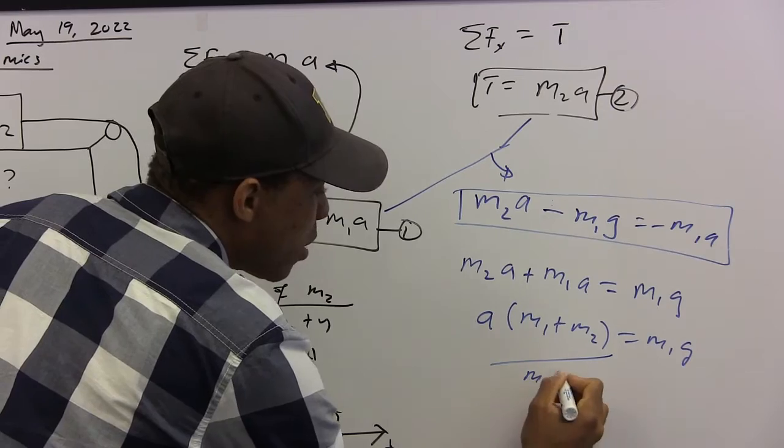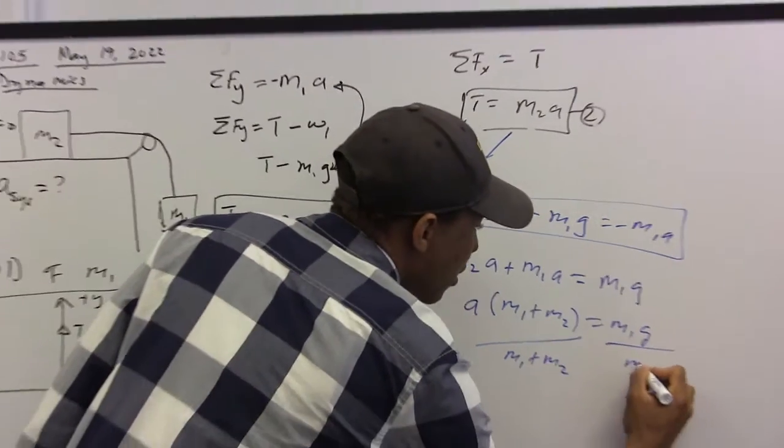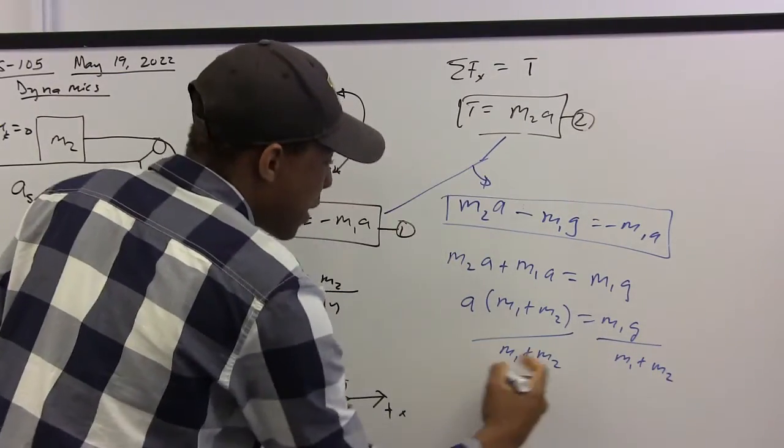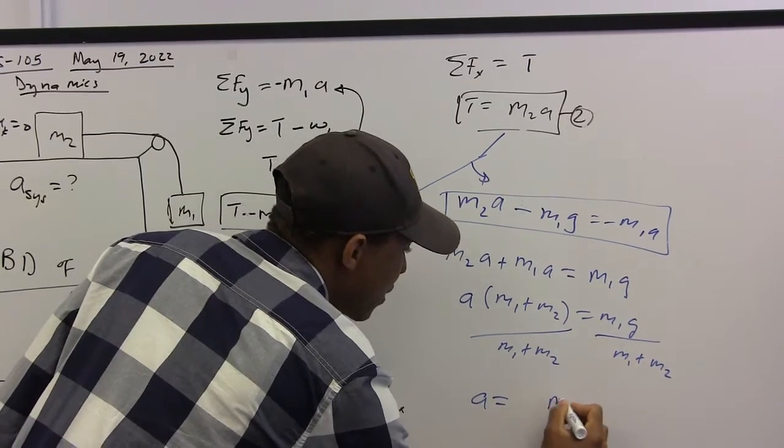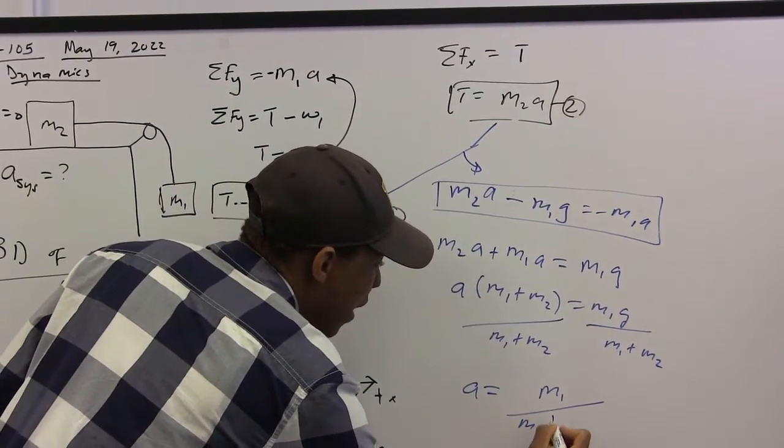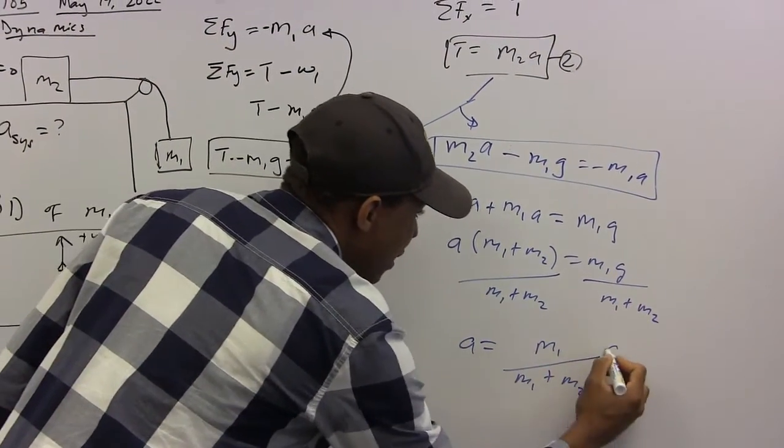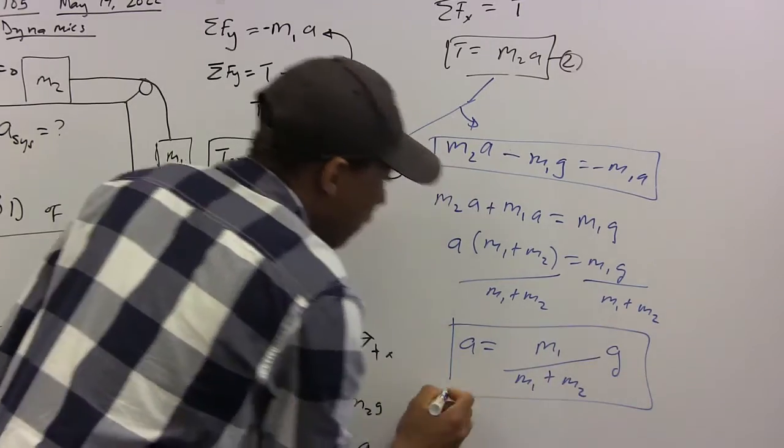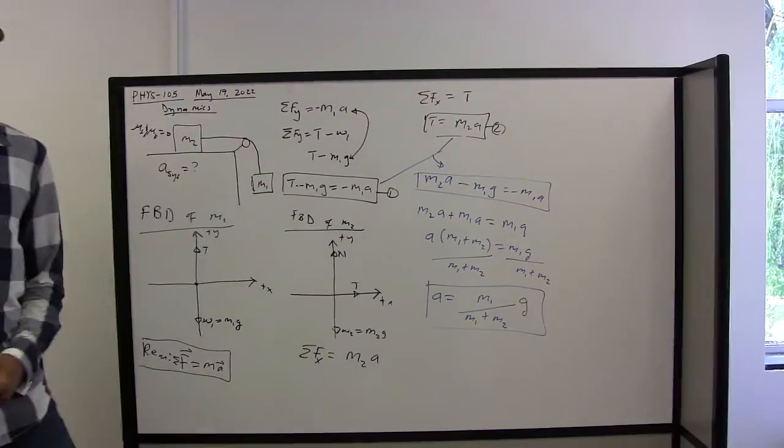These cancel out, and the acceleration of the system is mass one divided by the sum of the masses times acceleration due to gravity. This is the acceleration of the system.